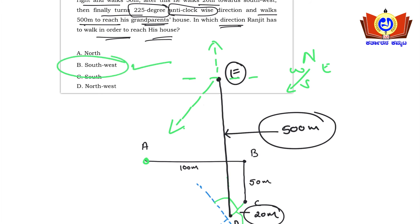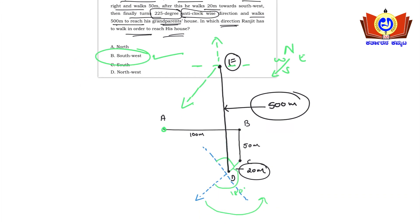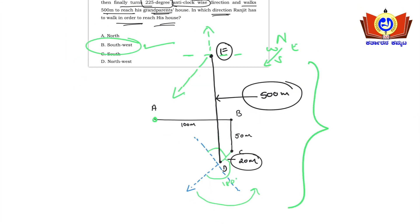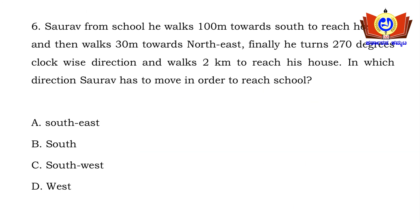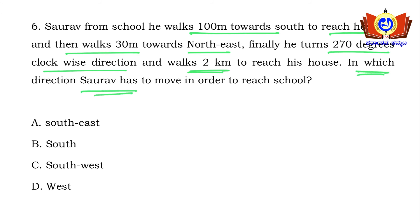It's a simple question, but drawing the map accurately is very important — you must not make mistakes there. Moving on to the next question: Saurabh walks 100 meters south from school to reach hospital, then walks 30 meters northeast. Finally he turns 270 degrees clockwise and walks 2 kilometers to reach his house. In which direction must Saurabh move to reach school?